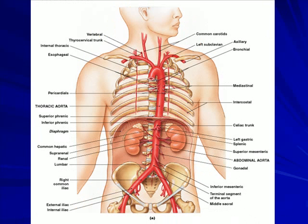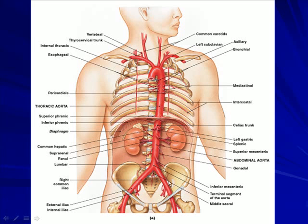The aorta divides into the aortic arch, the thoracic or descending aorta, and the abdominal aorta. The celiac trunk and renal arteries should be easily identifiable. The abdominal aorta bifurcates into the right and left common iliac arteries.